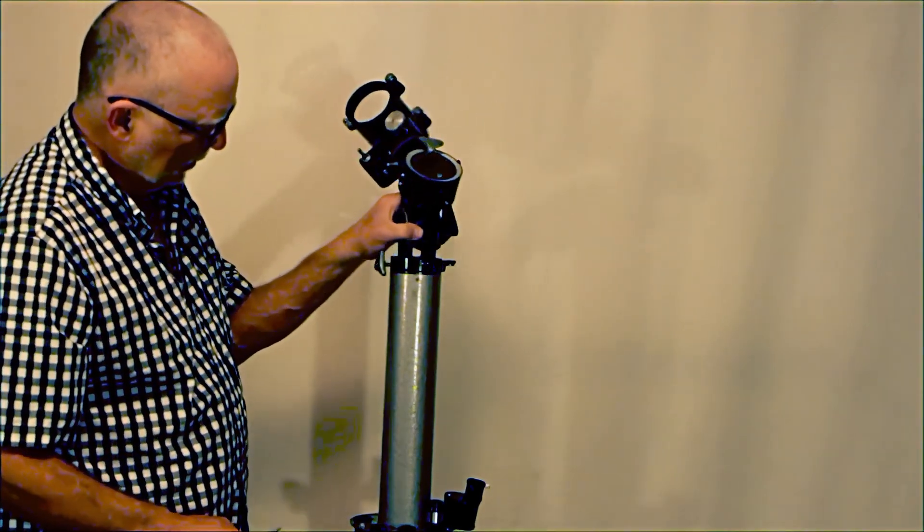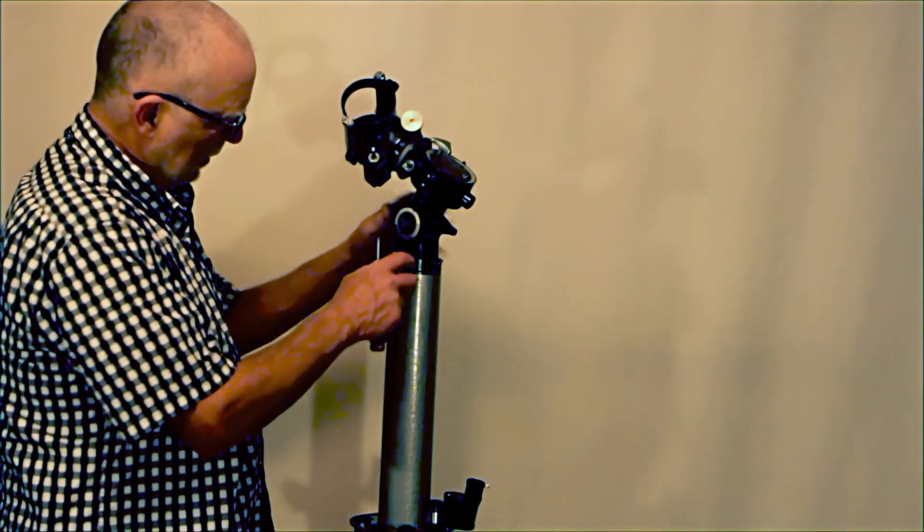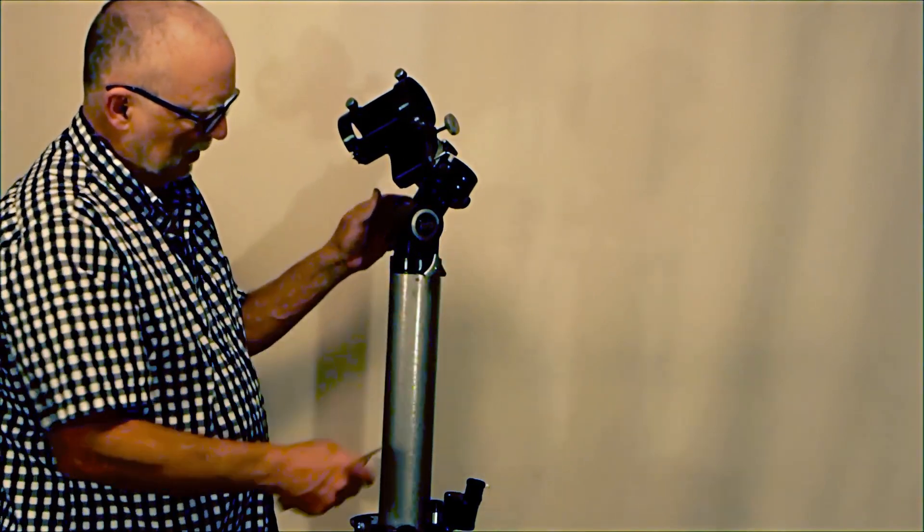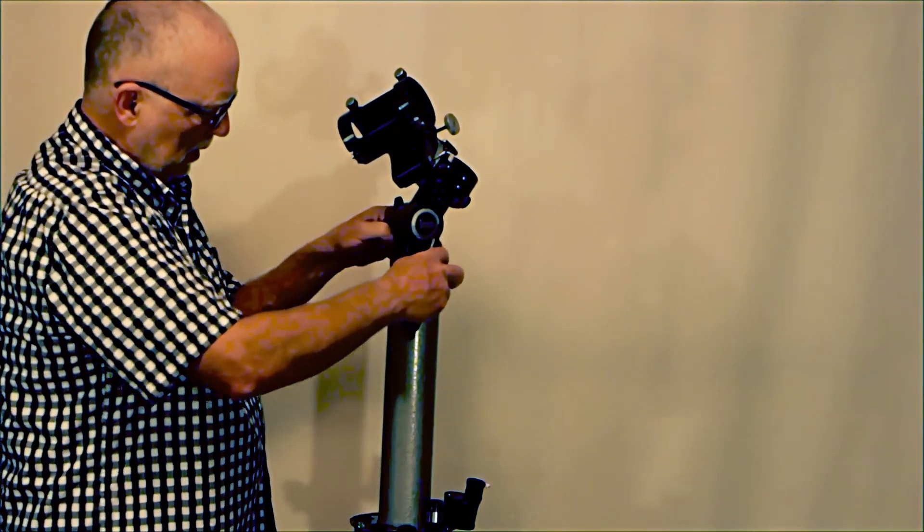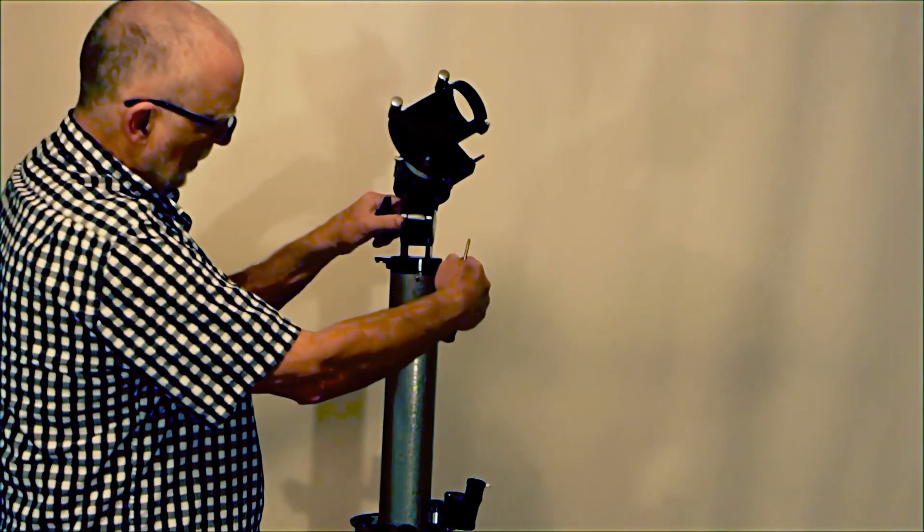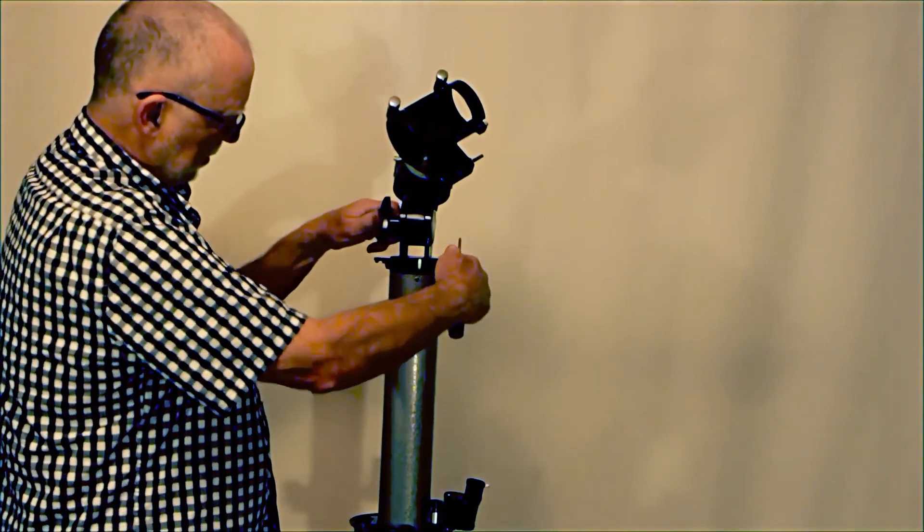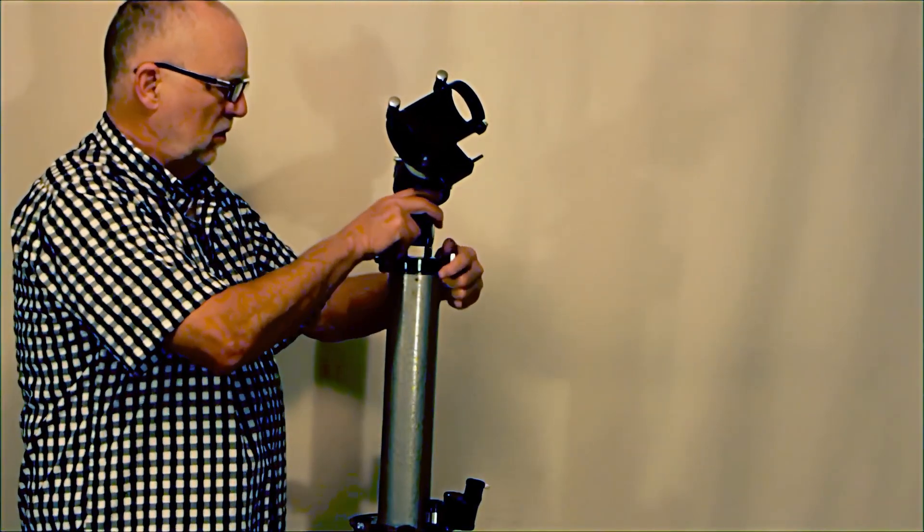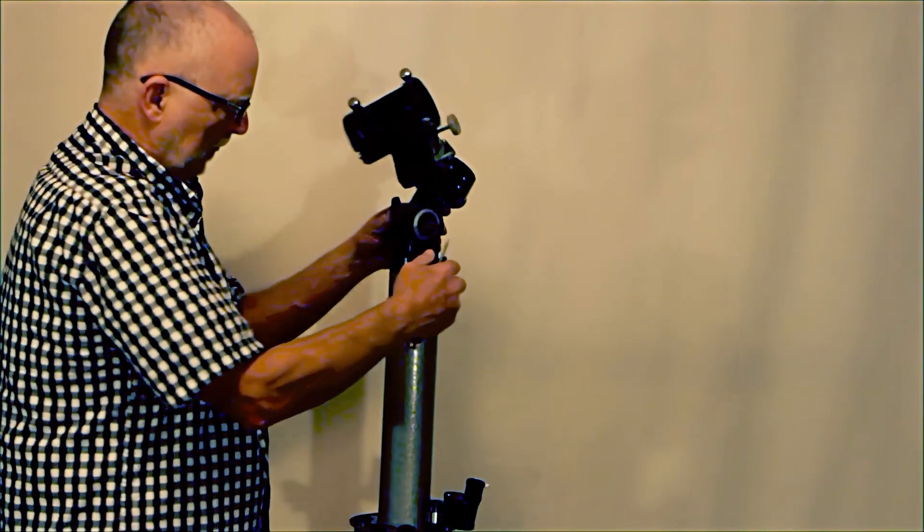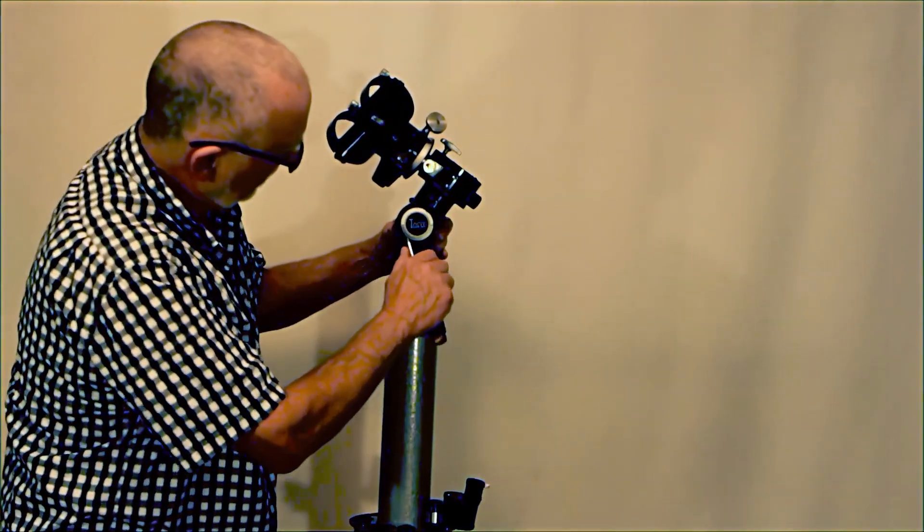So you can align it north, south, east, and west. And then you can lock it down here. So that will adjust for the azimuth setting of the scope. Let's put it here so you guys can see what's going on.